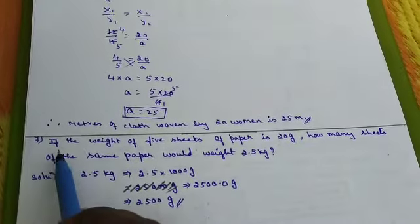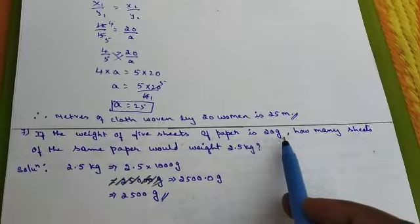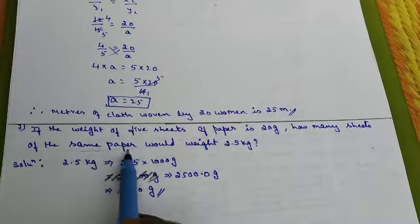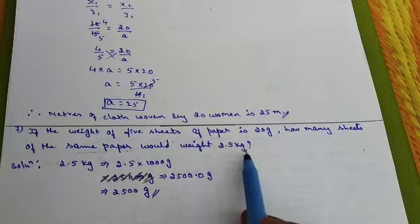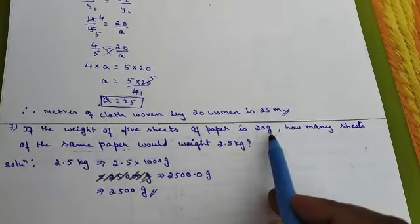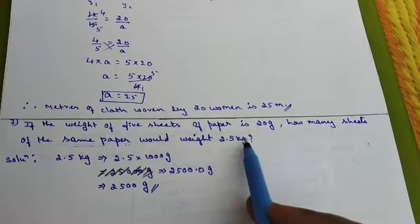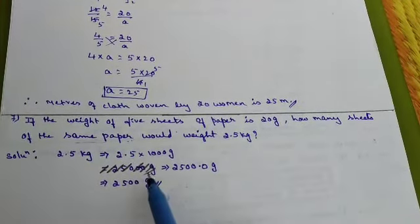Seventh question. If the weight of 5 sheets of paper is 20 grams, how many sheets of same kind of paper would weigh 2.5 kg? Observe here children, the weighing is given in grams and here in kg. Therefore first convert the kg into grams.